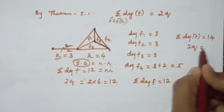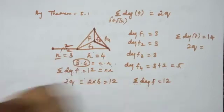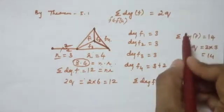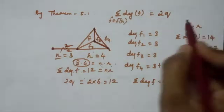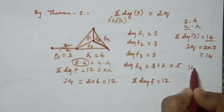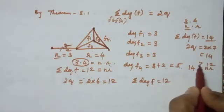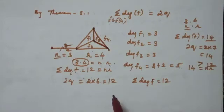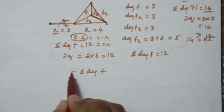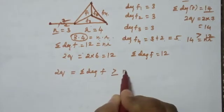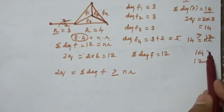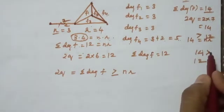The number of edges is now 7. So 2 times 7 equals 14. The cycle length is still 3 and the number of faces is still 4, so N times R is still 12. But the sum of degrees is now 14, which is strictly greater than 12. So: sum of degrees of faces equals 2Q, which is greater than or equal to N times R.